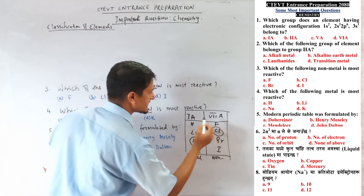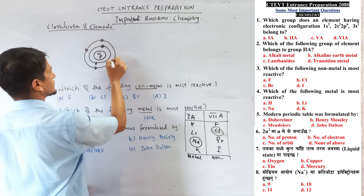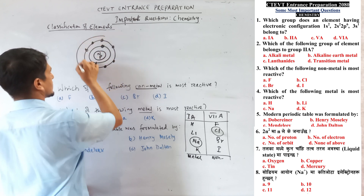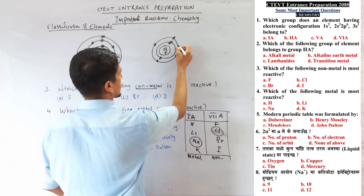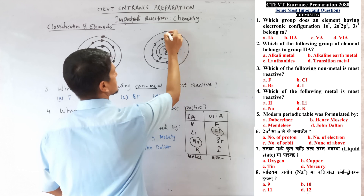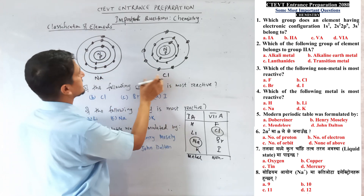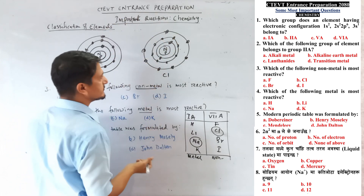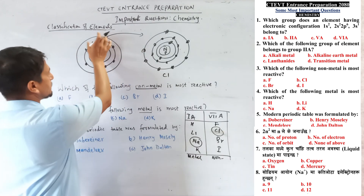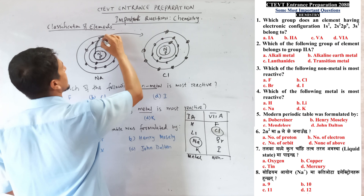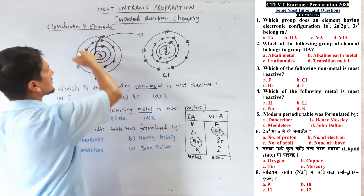For example, sodium and chlorine ionic bonding: sodium has 2 electrons in first shell, 8 in second, 1 in third. Chlorine has 2 in first shell, 8 in second, 7 in third. Sodium gives its 1 electron to chlorine to complete chlorine's octet, forming an ionic bond.